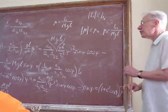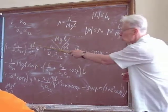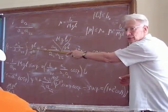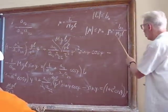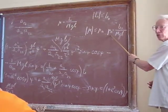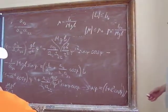So in fact we have two parameters there, and also one additional parameter mu zero.